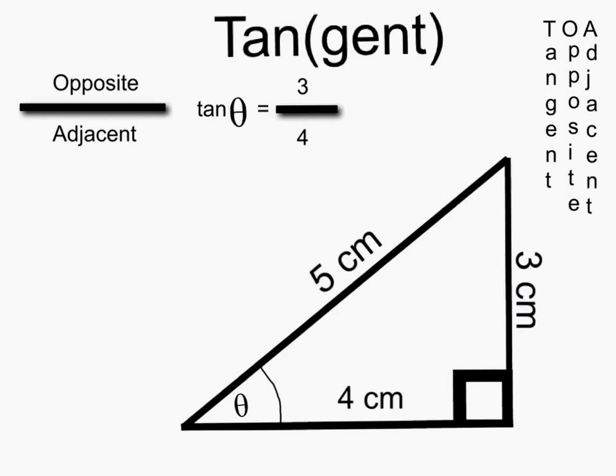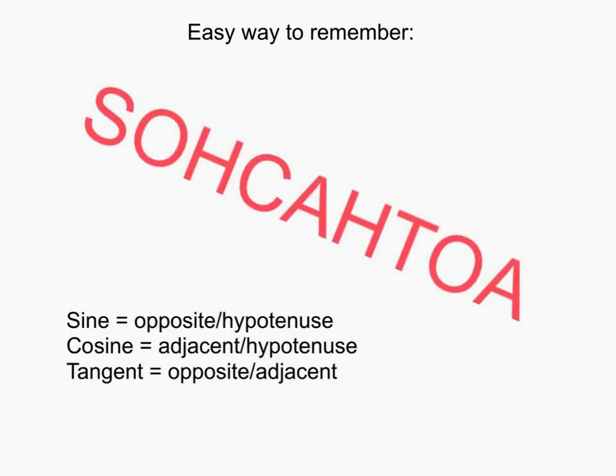An easy way to remember the 3 basic functions of trigonometry is the word SOHCAHTOA. It means sine equals opposite over hypotenuse, cosine equals adjacent over hypotenuse, and tangent equals opposite over adjacent.